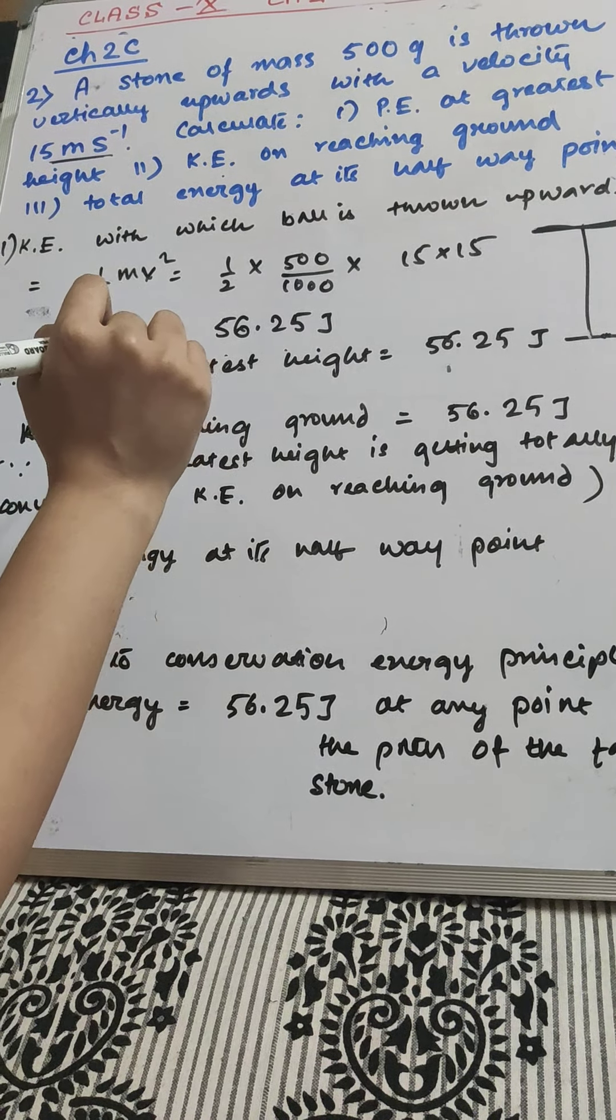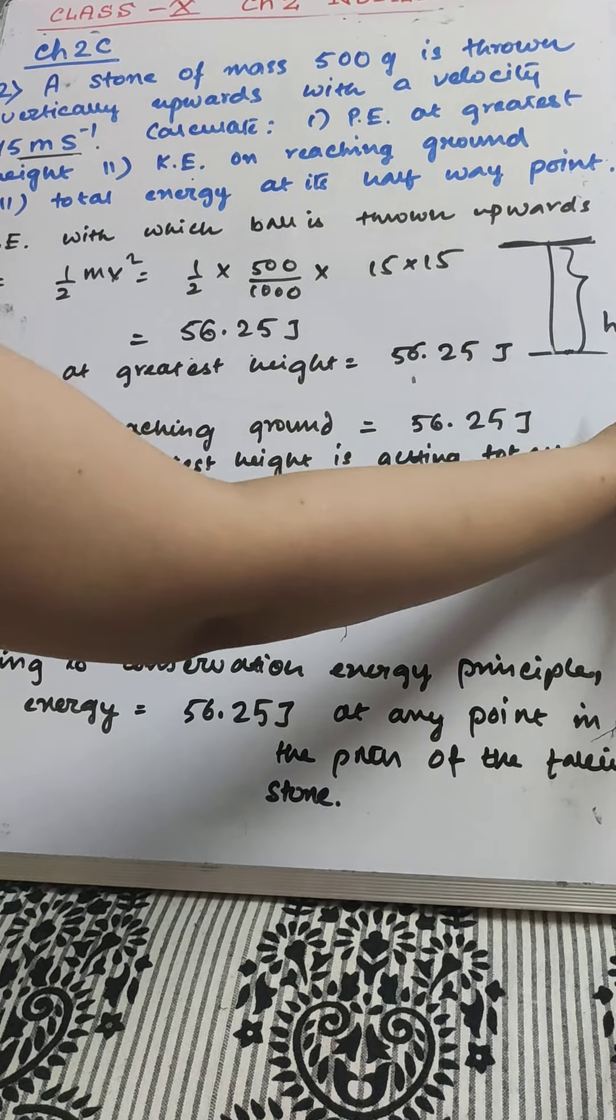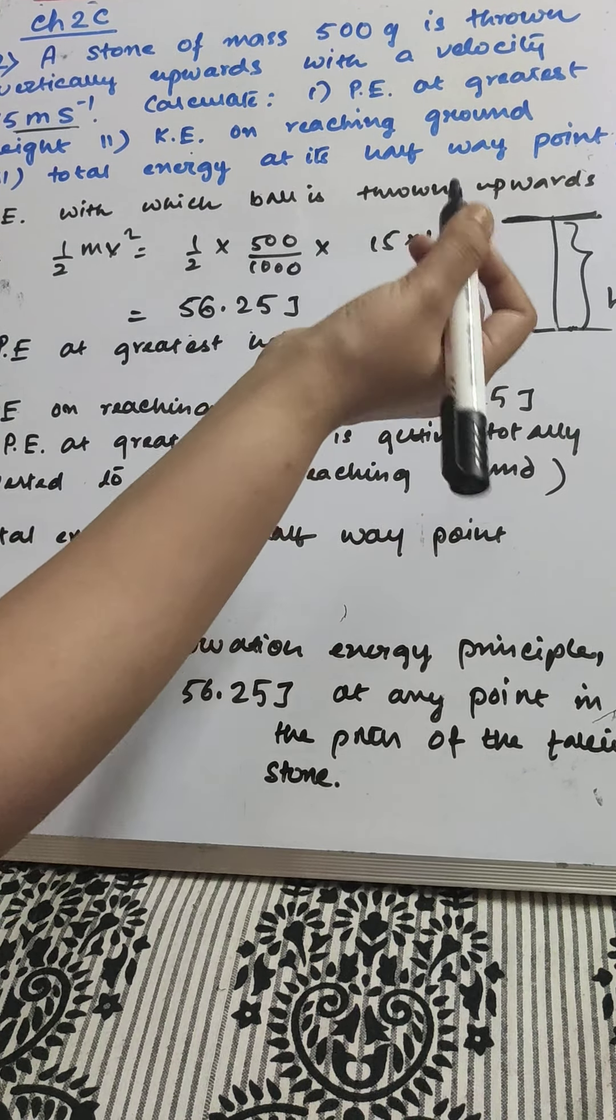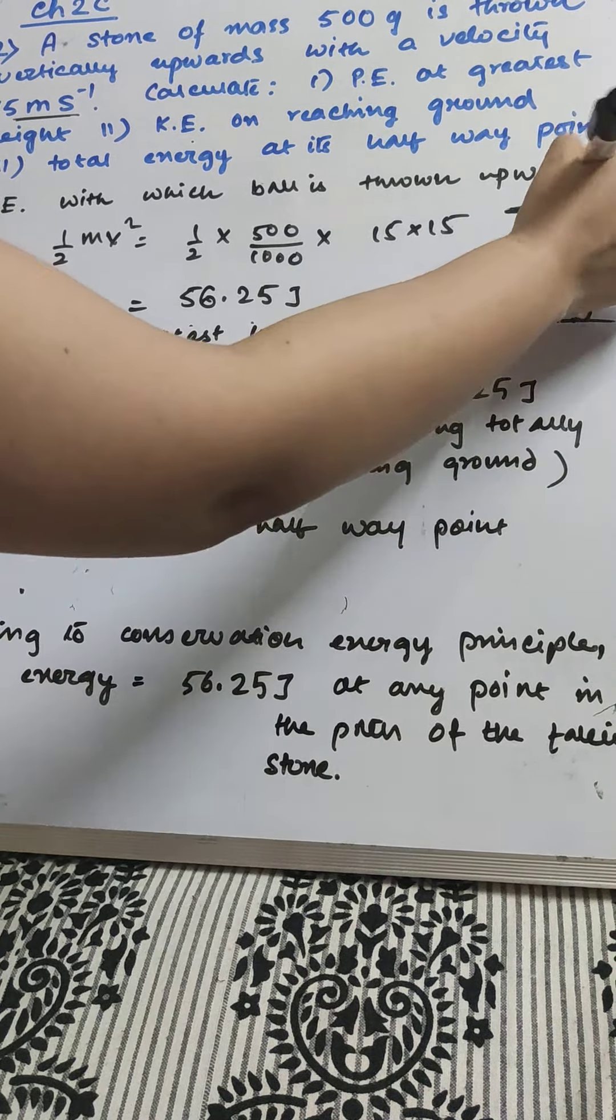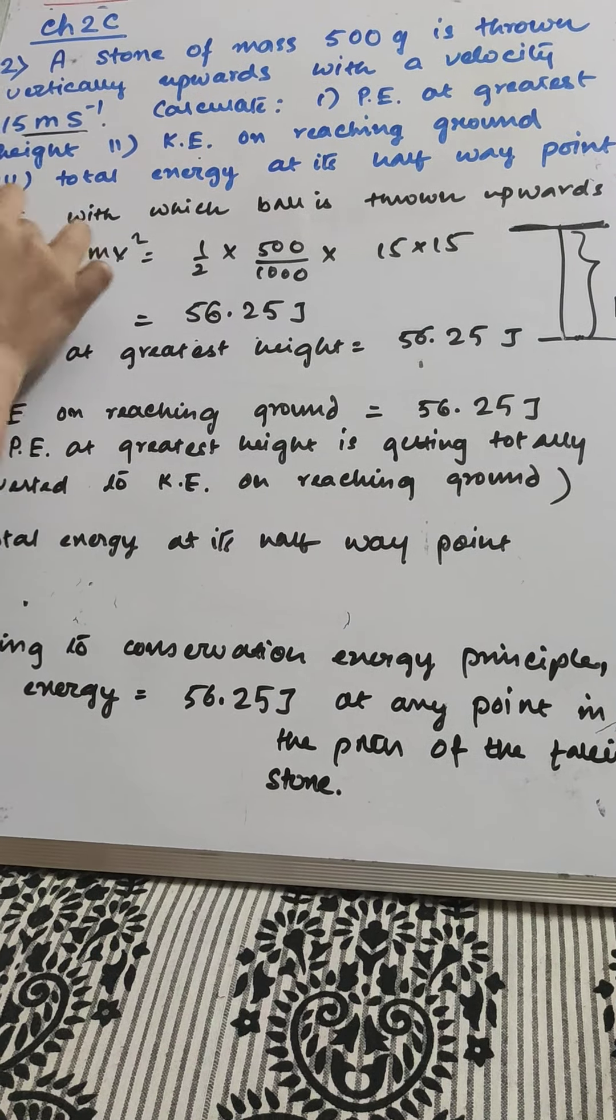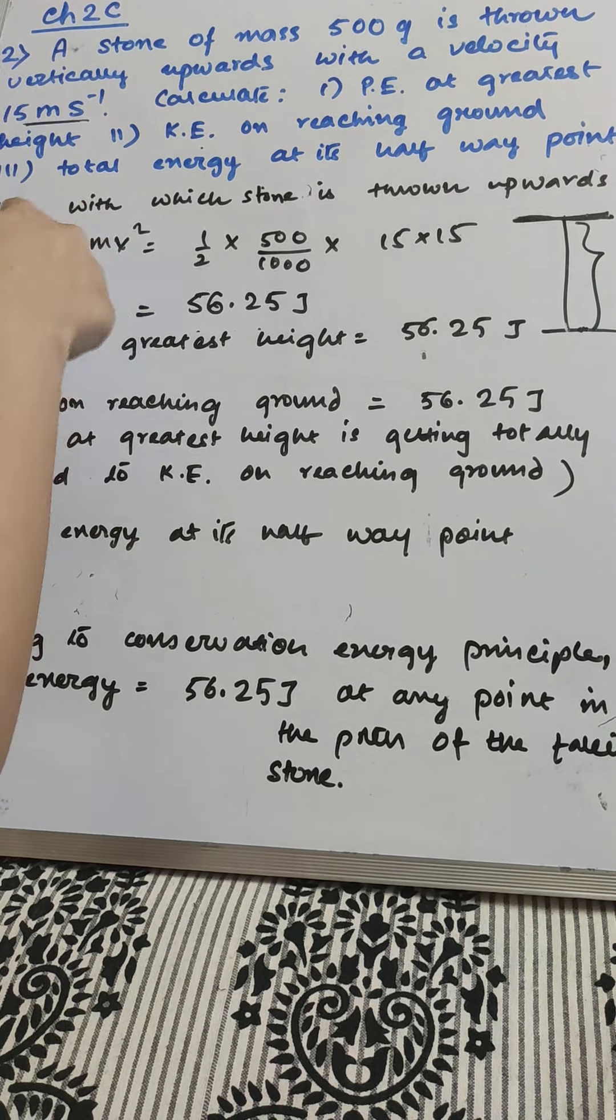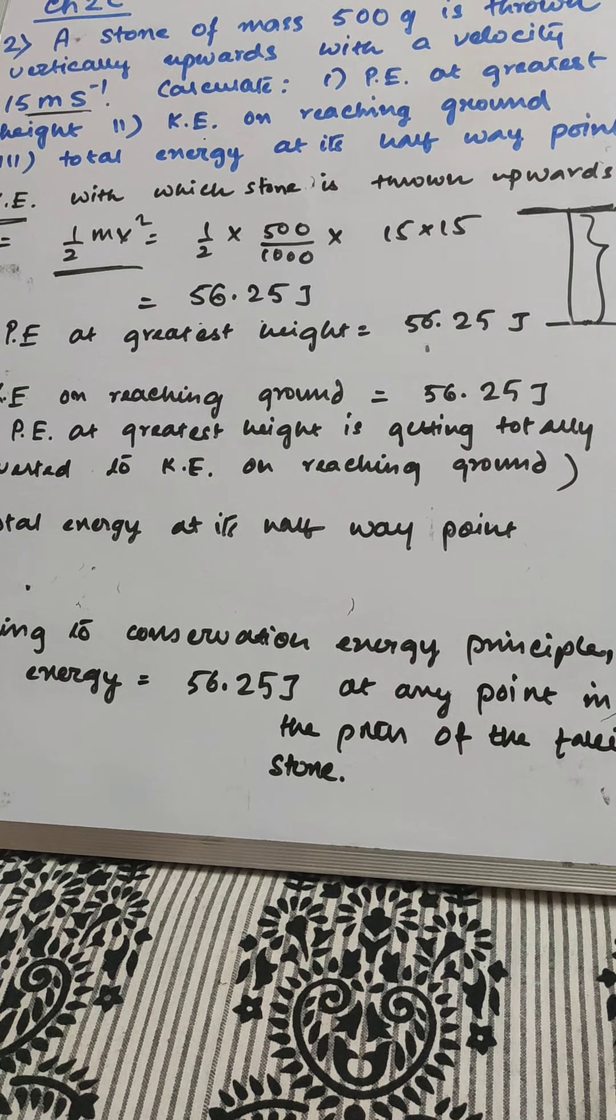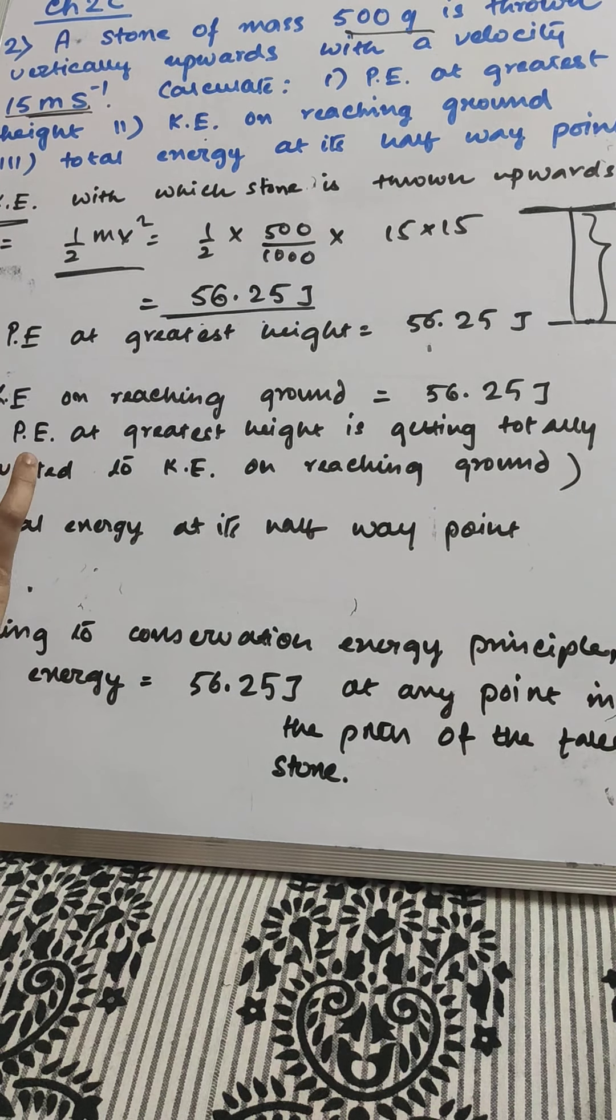For the first part, potential energy at the greatest height. If this is H, it is not given to you in the sum. When we are throwing the stone upwards, it is possessing some kinetic energy. We are throwing the stone with some velocity, so it will possess kinetic energy. What is the kinetic energy? Half mv square. We have got velocity, we have got mass. Simple calculation, just substituting the values.